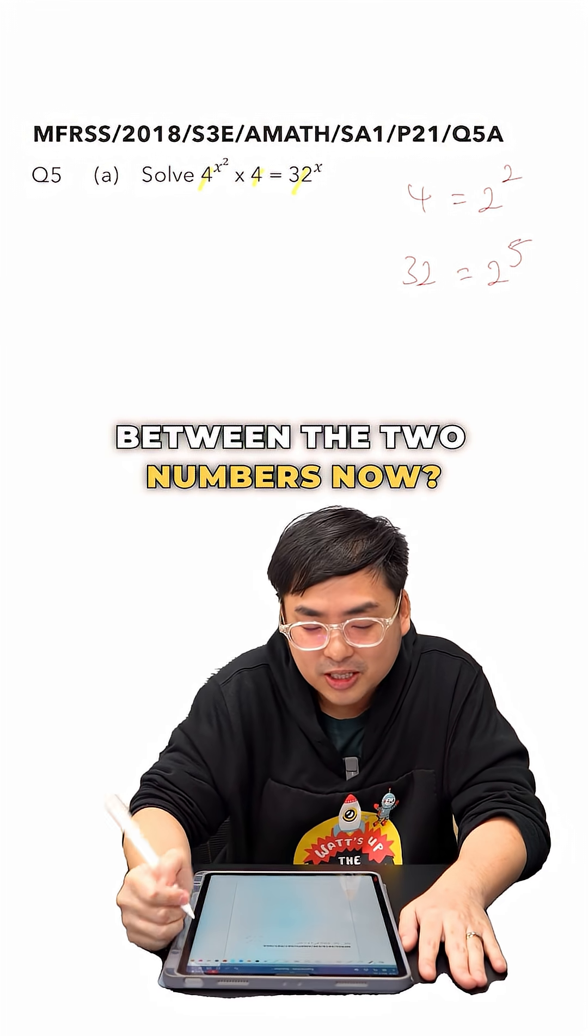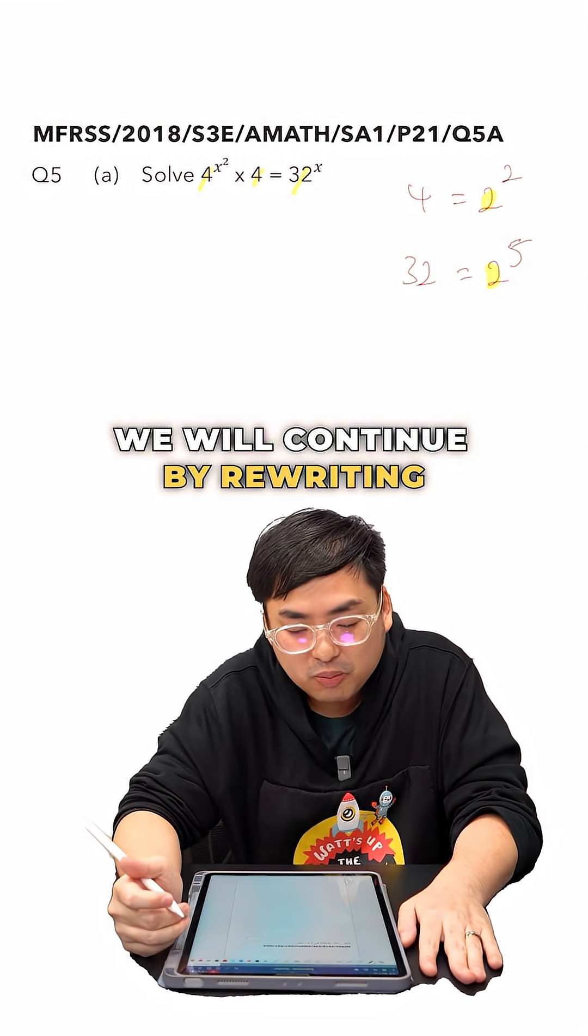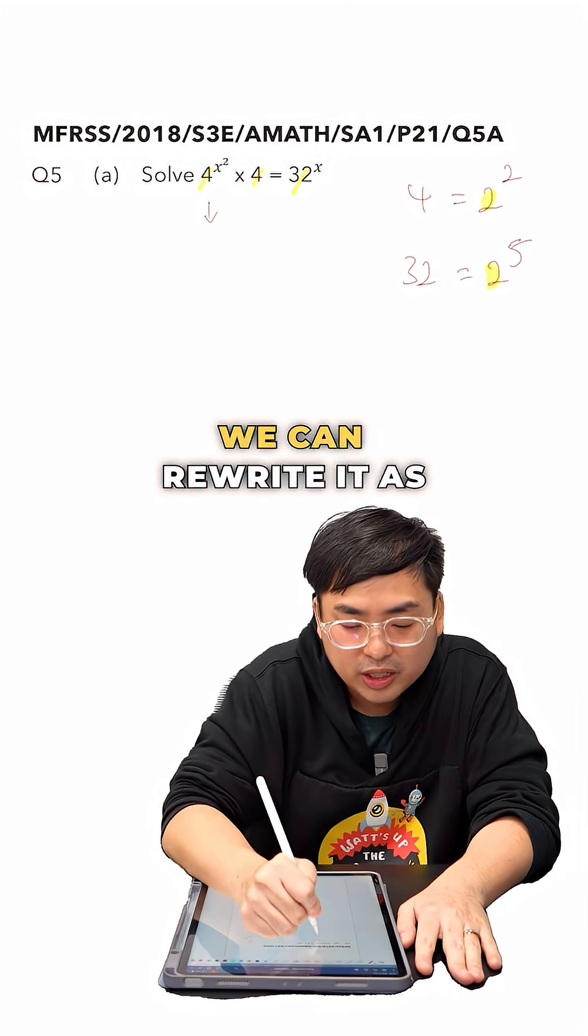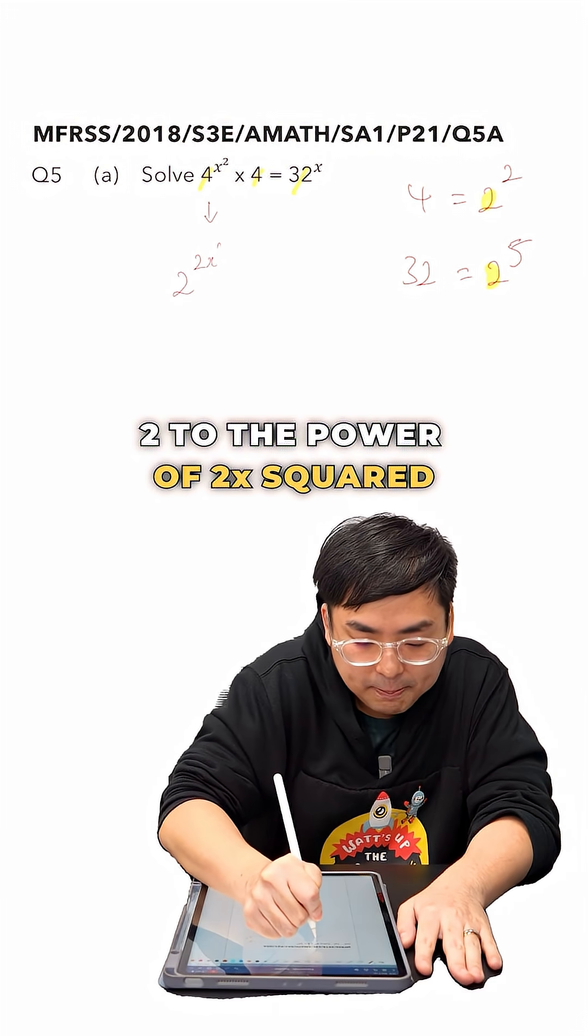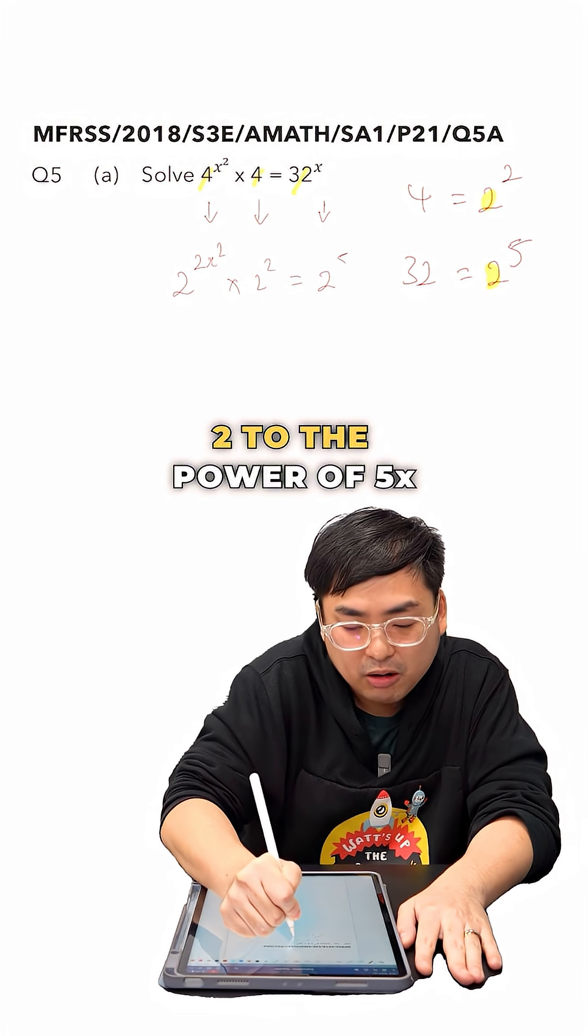Did you all see something common between the two numbers now? They share a common base of 2. And to proceed, we will continue by rewriting this number to the base 2. For 4 to the power of x squared, we can rewrite it as 2 to the power of 2x squared. For 4, it becomes 2 squared. And for 32, we will get 2 to the power of 5x.